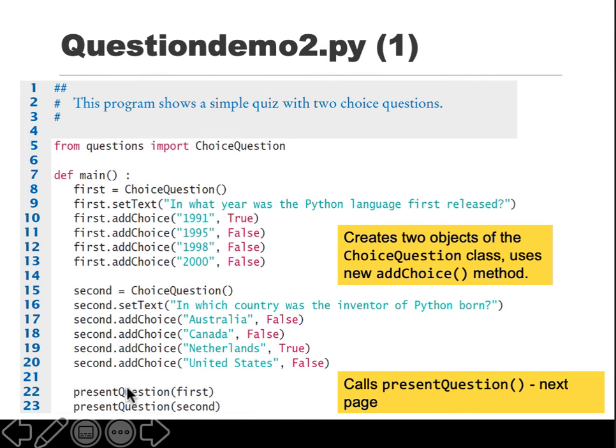What's happening in the main driver, the demo file? First is ChoiceQuestion - it's a subclass. You create an object called first of the subclass, and you're saying first dot setText.